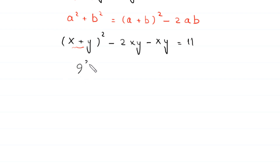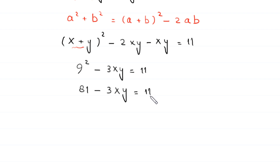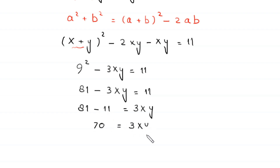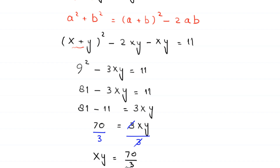We replace x plus y with 9 from equation two. This becomes 9 squared, and negative 2xy minus xy becomes negative 3xy, is equal to 11. So 81 minus 3xy equals 11. Moving 11 to the left: 81 minus 11 equals 3xy, giving 70 equals 3xy. Dividing both sides by 3, we get xy equals 70 over 3.